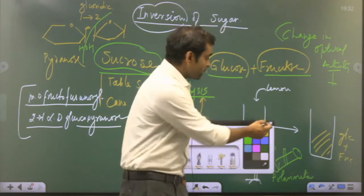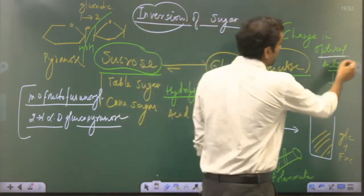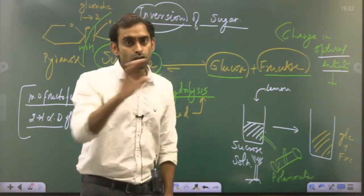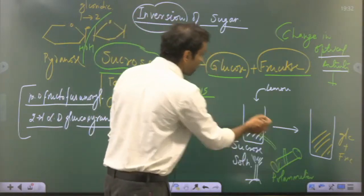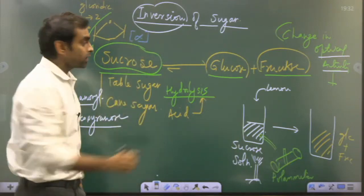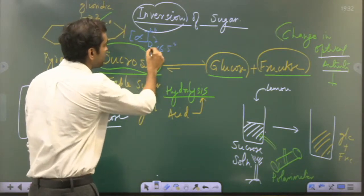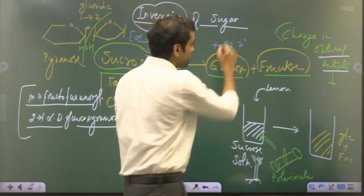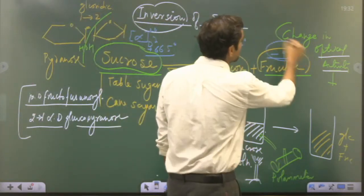The way to experimentally identify this process is through optical activity measurement. The specific optical activities are: sucrose = +66.5°, glucose = +52.7°, and fructose = -92°. So in a solution containing equal amounts of glucose and fructose, glucose rotates light 52.7° to the right, while fructose rotates it 92° to the left — a tug of war in which fructose dominates because it is more powerful.